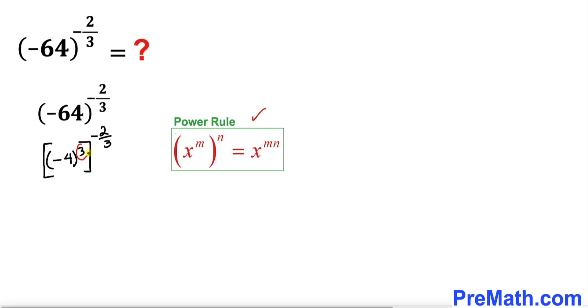Therefore, we can write this as negative 4 to the power of 3 times negative 2 thirds.